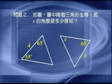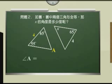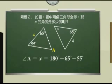问题二如图，图中两个三角形全等，那X的角度是多少呢？因为X的对边为4，所以X的对应角应该是角A，所以角A等于X等于180度－65度－55度等于60度。